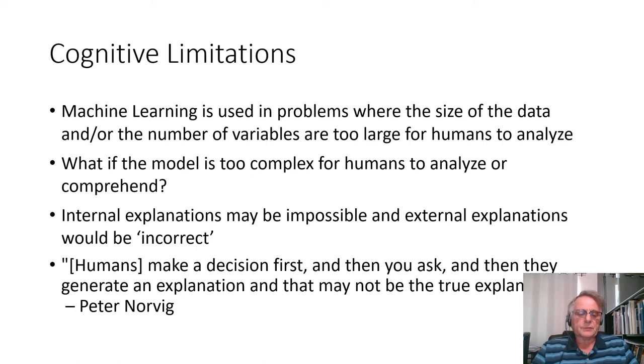Peter Norvig put the similar problem in the following way. Humans make decisions first and then they generate an explanation and that may not be the true explanation. That's the issue that needs to be resolved. Multiple attempts obviously are now under development and hopefully sooner or later we will have a progress in this direction significantly.